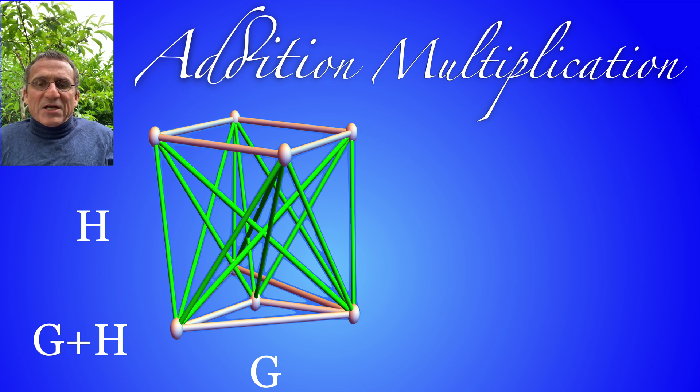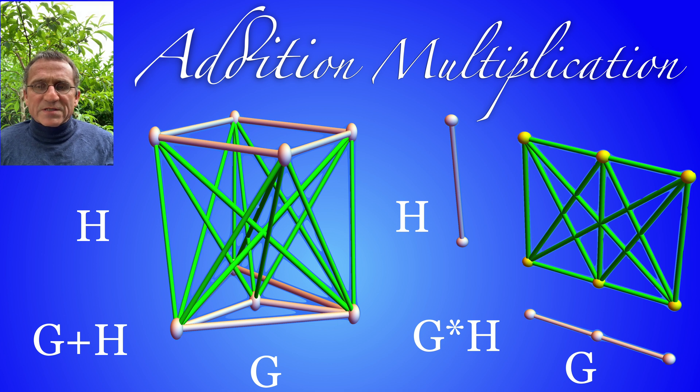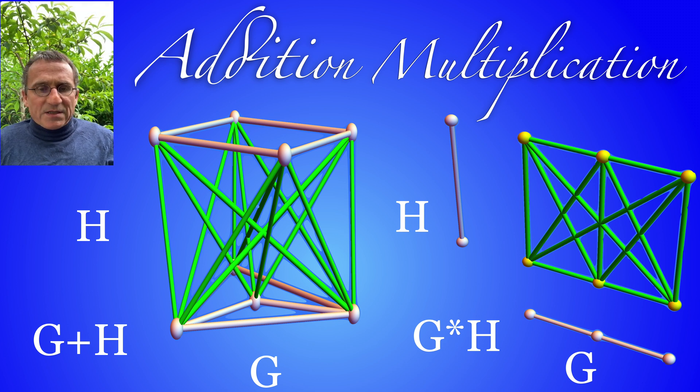For multiplication we take the Cartesian product of the graph vertices and take any connection if it projects onto a connection on one of the graphs. We see here an example.